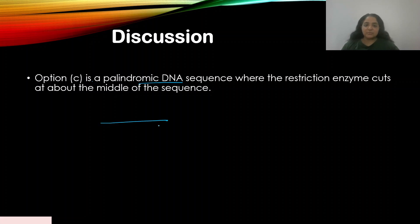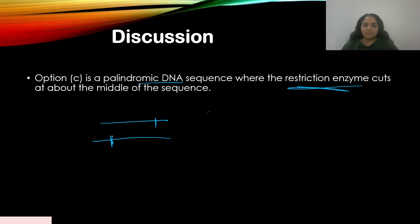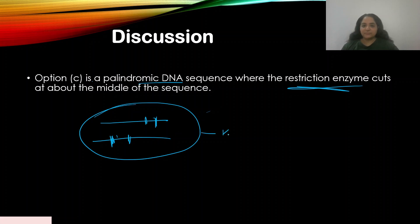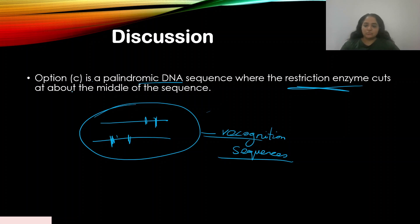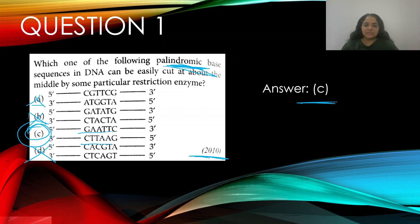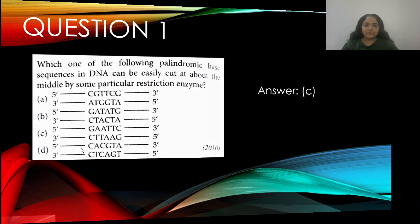Option C is a palindromic DNA sequence — a sequence which reads the same from left to right and right to left. Restriction enzymes recognize palindromic sequences in the DNA fragment and make a cut, either at one position or another depending on the enzyme. These are recognition sequences. Option C reads GAATTC from left to right and GAATTC from right to left, so option C is the correct answer.